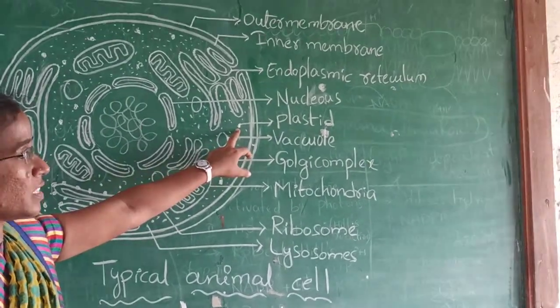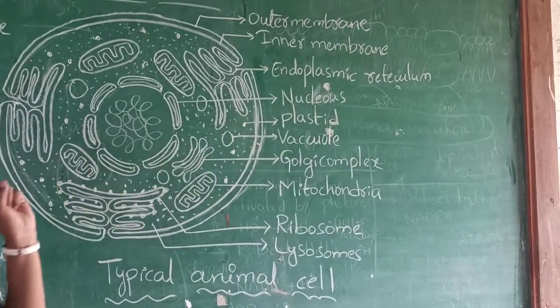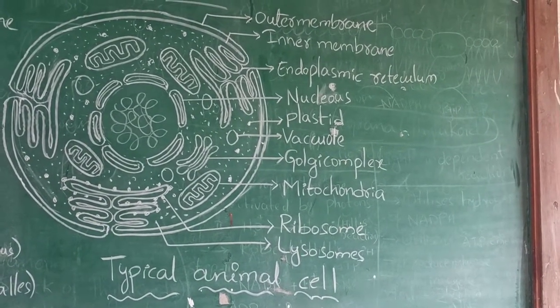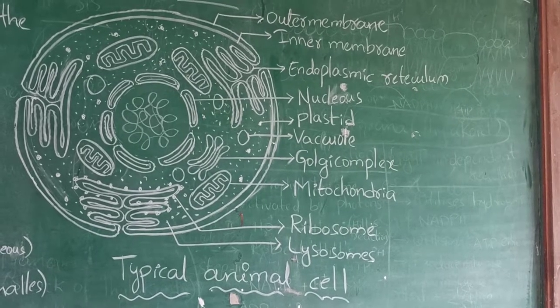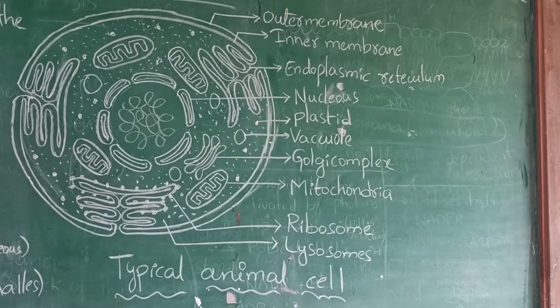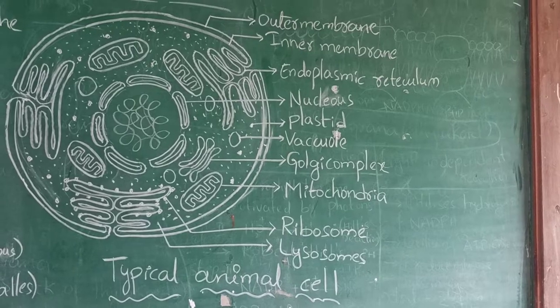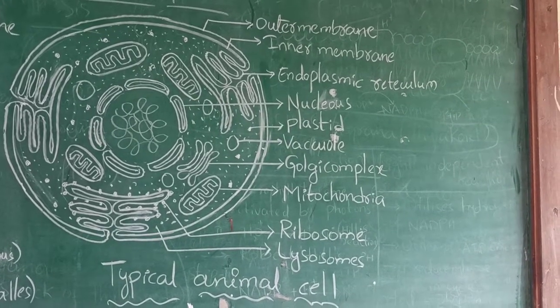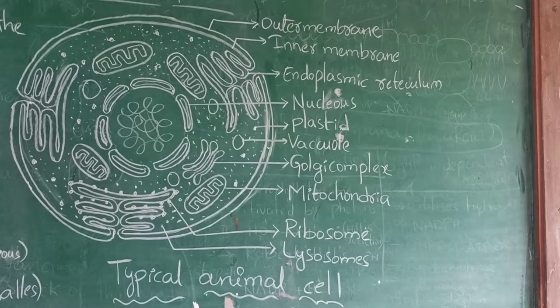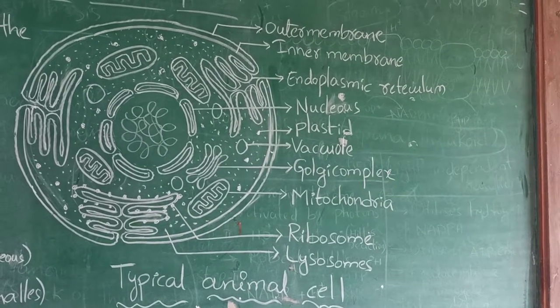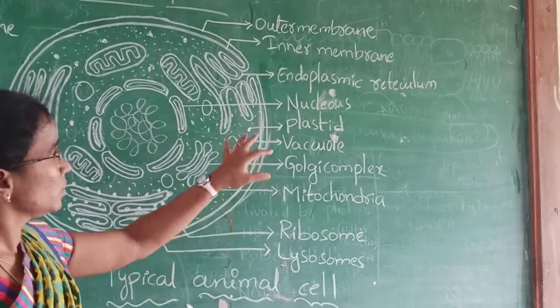Here we have plastids. Plastids are having three types: carotenes, xanthophylls, and chlorophyll. The plastids are useful for doing the metabolic activities. We know that in chlorophyll, the photosynthetic process will occur.